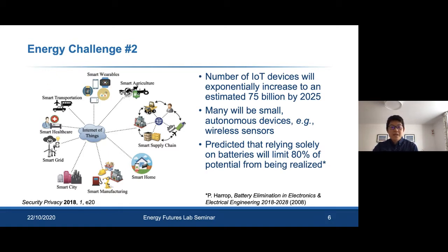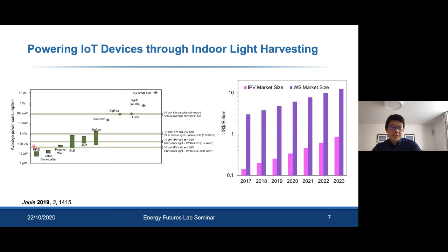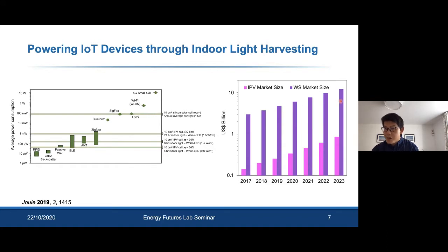One option is to use solar cells. Many IoT devices will be located indoors, so we need to harvest ambient lighting — this is where indoor photovoltaics come in. This plot shows the power consumption of various wireless sensors, and indoor solar cells are already sufficient to power a large number of them, such as RFID tags and Wi-Fi. The compound annual growth rate for indoor PV is 70%, larger than both the wireless sensor market and the outdoor PV market.